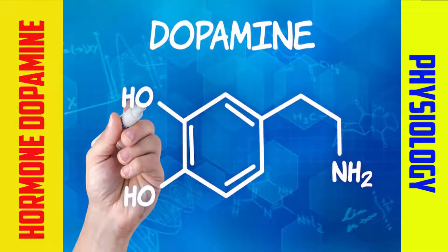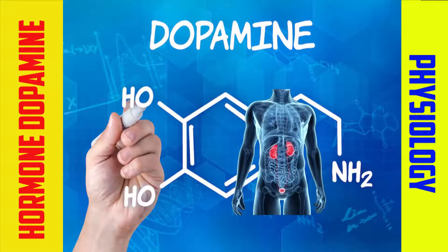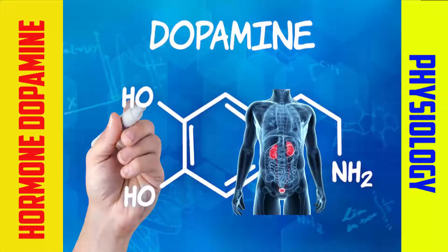The two-middle of the receptor is called the renal of the receptor. The two-middle of the receptor is called the renal of the flange-like arterial. The two-middle of the receptor, which is called the renal of the receptor.